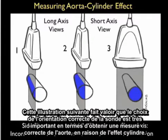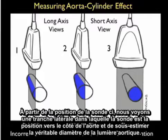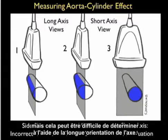This next illustration makes the point that choosing the correct probe orientation is very important in terms of getting a correct measurement of the aorta due to the cylinder effect. Let's look at the two long axis views of the probes along the aorta. Beginning in probe position 1, we see a side slice in which the probe is positioned towards the side of the aorta, underestimating the true diameter of the aortic lumen. Positioning the probe towards the middle, as shown in probe position 2, will get a correct diameter, but this can be difficult to ascertain using the long axis orientation.